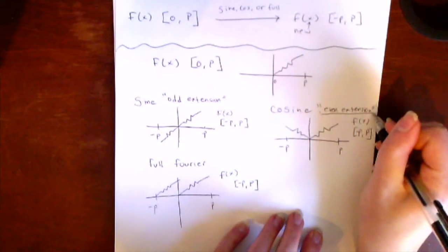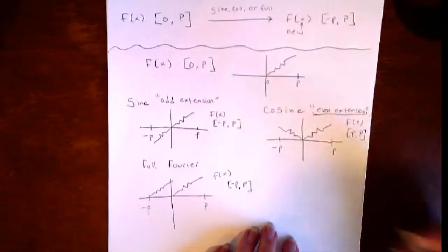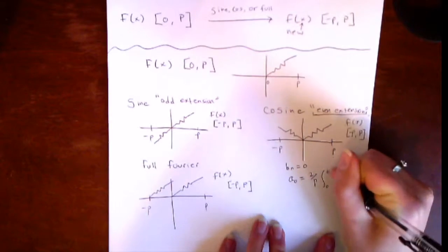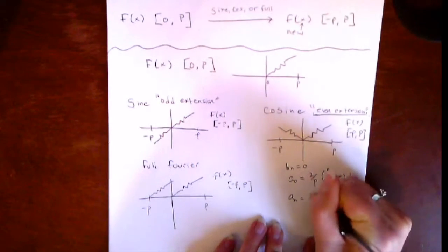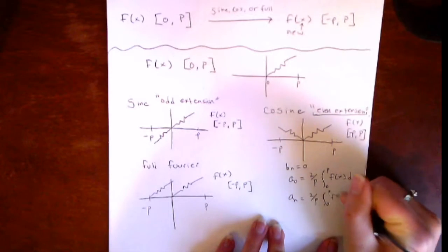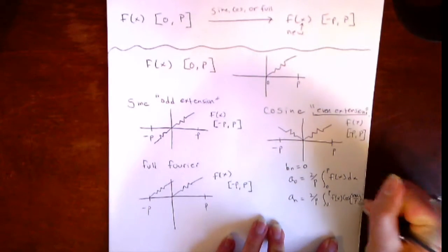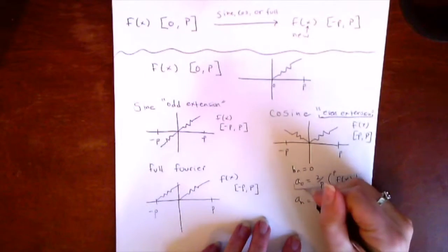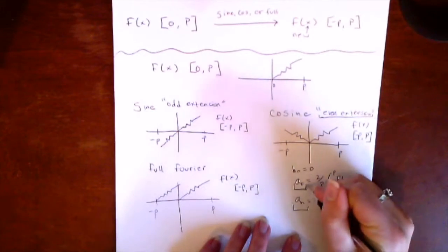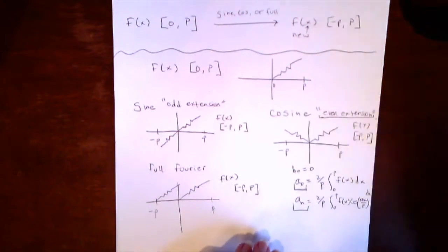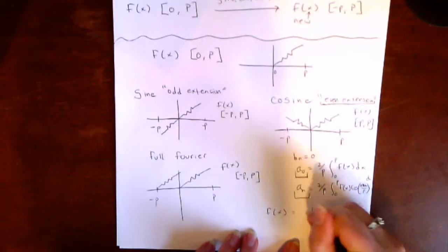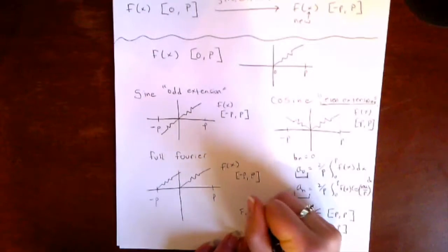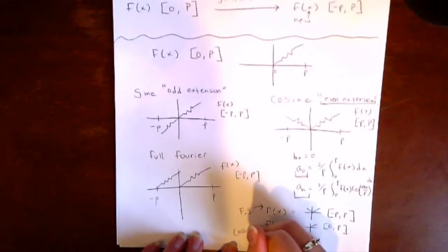If you did the cosine extension, your function will always be even. Because it's even, b_n equals 0, and a₀ equals 2 over p times the integral from 0 to p of f(x) dx, and a_n equals 2 over p times the integral from 0 to p of f(x) cosine(nπx/p) dx. Notice that a₀ and a_n are the same as they would be for an even function's Fourier series. This means if you had an even function defined on negative p to p, its Fourier series would equal the cosine series of the same function defined on 0 to p.